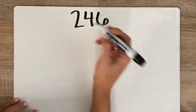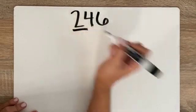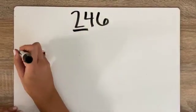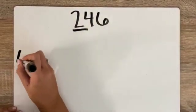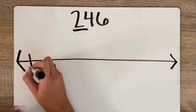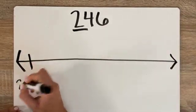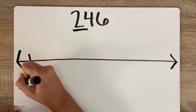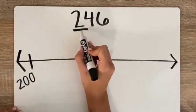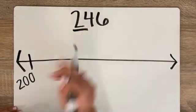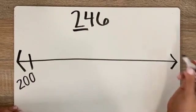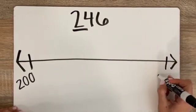246 rounded to the nearest 100. I think to myself, how many hundreds do I have in 246? Well, I have 200 — I have two of them. So this will be 200. And then what's one more 100 than two? That'd be three, so 300.